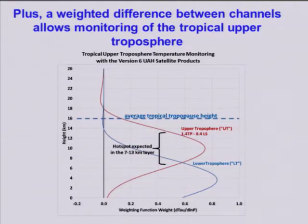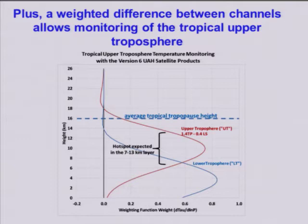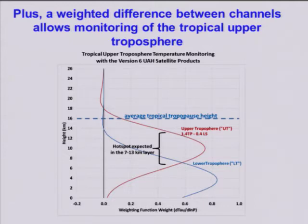This is our tropical upper troposphere product. That red curve shows the vertical weight, and you can see it's perfectly positioned to capture where the hot spot is supposed to be — that bracket from the 7 to 13 kilometer layer. This is a new product that we're going to be emphasizing to try to track the existence or non-existence of the hot spot in the tropical upper troposphere.